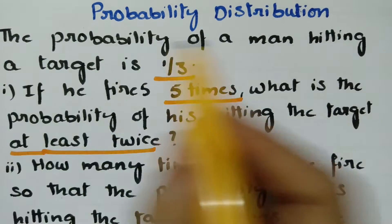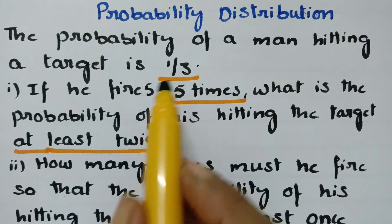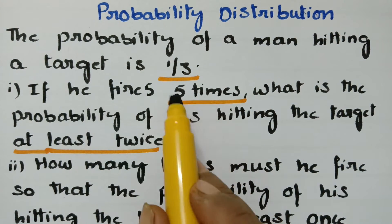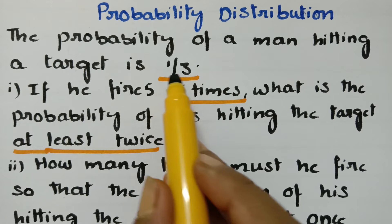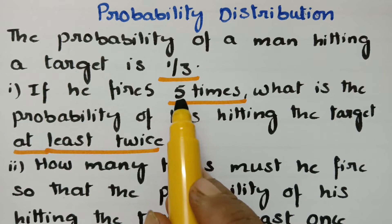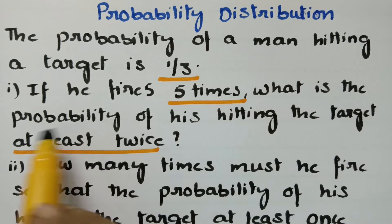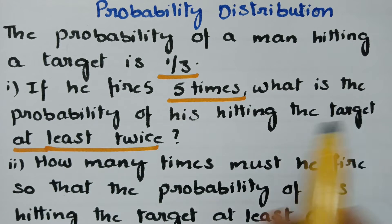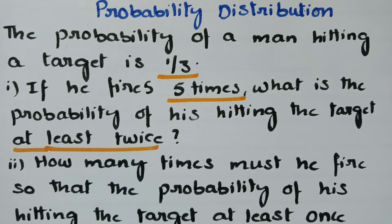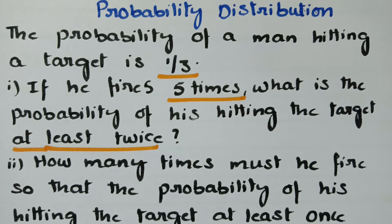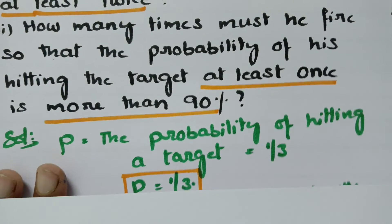From the question, the probability of a man hitting a target is 1 by 3. If he fires 5 times, P is 1 by 3, n is 5, Q is 2 by 3. We find the probability of hitting at least twice — minimum 2 times, maximum 5 times. So I subtracted: 1 minus [P(X=0) + P(X=1)].